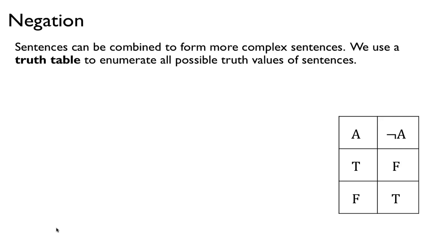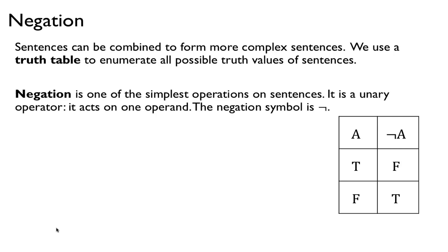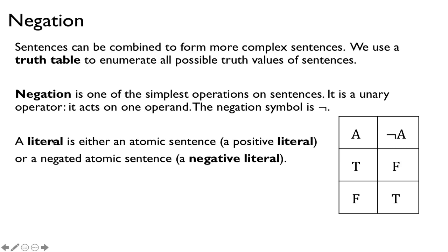When we have a bunch of sentences, we want to combine them to form more complex sentences. We'll explain this using truth tables, which list all possible truth values. One of the most basic operations is negation — a unary operation that acts on one operand. If A is true, its negation is false, and vice versa. A literal is another word for an atomic sentence. A positive literal is just A; a negative literal is the negation of A.